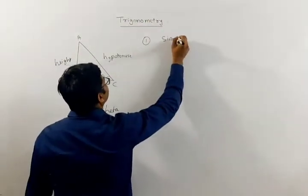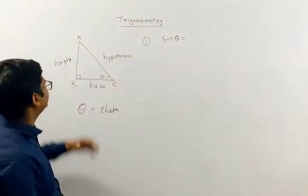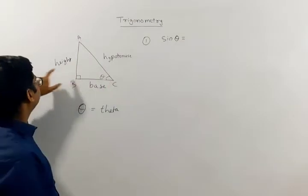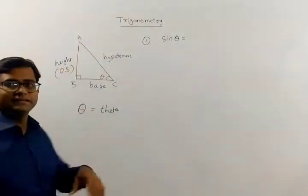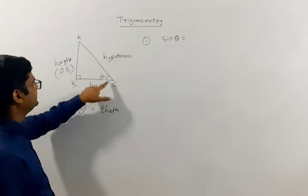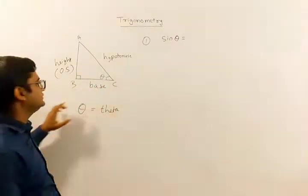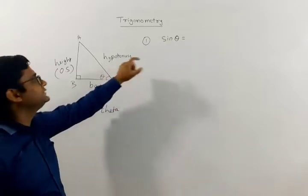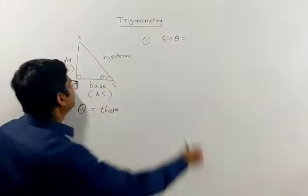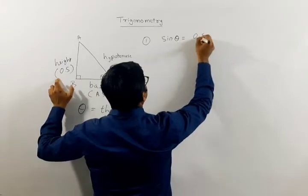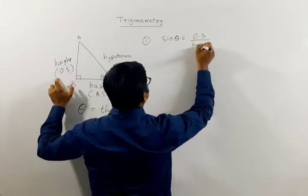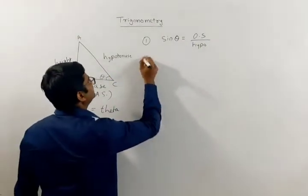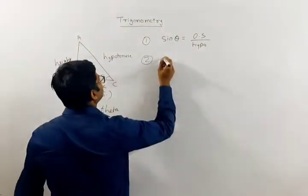The first ratio is sine of theta. For this angle, this is the opposite side — let us call this OS, which stands for opposite side. This side adjacent to theta we call the adjacent side, and this is the hypotenuse. So we define sine theta as opposite side upon hypotenuse.